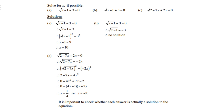Example (c): square root of (2 minus 7x) plus 2x equals 0. Transfer 2x to the right-hand side to get negative 2x. Squaring both sides gives 2 minus 7x equals 4x squared. Transfer all terms to one side and factorize to get x equals one quarter or x equals negative 2.